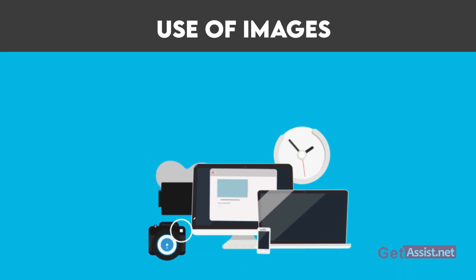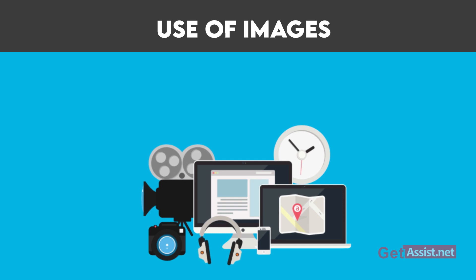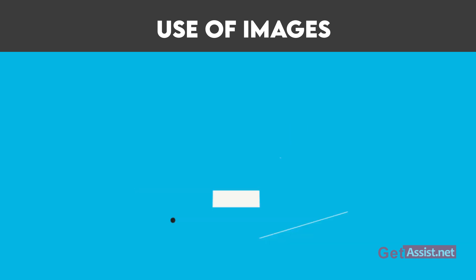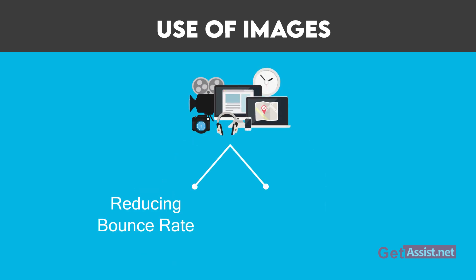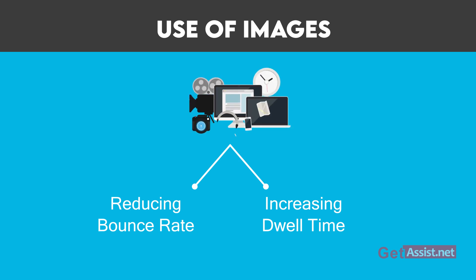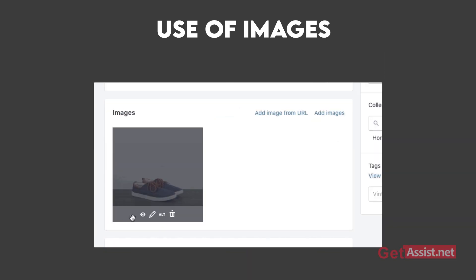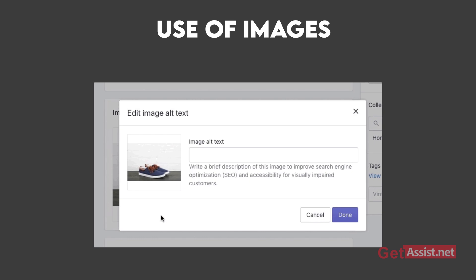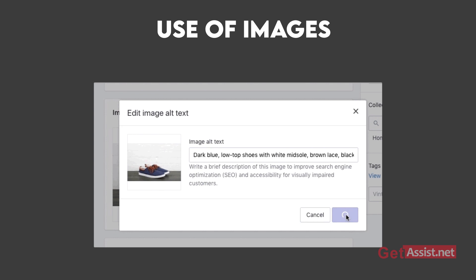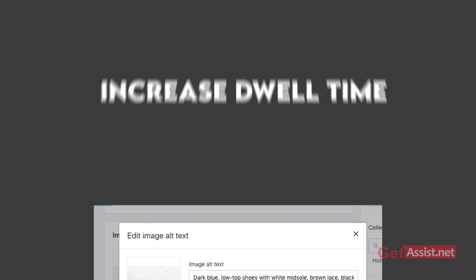The use of images, videos, and other multimedia on your pages can help reduce bounce rate and increase dwell time on your website. Using images allows you to break up your content, and you can also include the target keyword in your image alt tag. Don't forget to provide a brief description of your image in the file name.